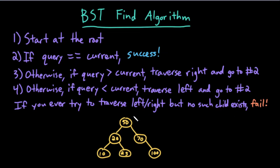Let's start with a simple example — let's look for the node 20. I would start at the root. 20 is not equal to 50, and 20 is less than 50, so according to the rule, I should traverse left and then repeat. Is 20 equal to 20? Yes, it is. Therefore, I've succeeded — I found 20.